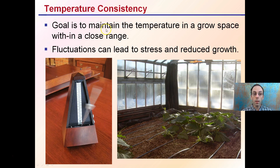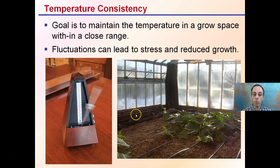Temperature consistency is another great thing. The goal is to maintain the temperature in a growth space within a close range. Fluctuations can lead to stress and reduced growth, so just because the midday temperature is fine, you want to make sure it's fairly consistent through the entire day — regulating that nighttime temperature and that daytime temperature. We can see the extreme conditions here, where it's nice and warm in the greenhouse and there is snow outside. That's why it's important to maintain those consistent conditions to keep growth as efficient as possible, both day, night, and through the entire grow season.